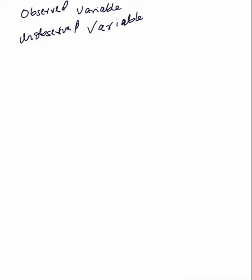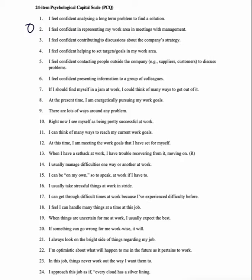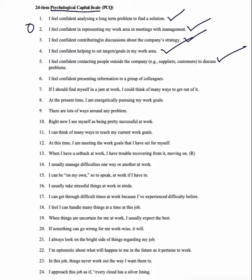What are observed variables and unobserved variables? Observed variables are the questions in your questionnaire. For instance, we said there are 24 items in the psychological capital scale or questionnaire. These are observed variables. We call them observed variables because when you go out to meet your respondents or administer questionnaires, they will respond to these questions — you are observing these questions.